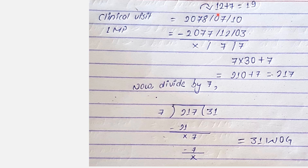We borrow 1 year from 2078, converting it to 12 months. So we have 12 plus 7 equals 19 months. Then 19 minus 12 equals 7 months. So 7 months into 30 plus 7 days equals a total of 217 days. Dividing 217 by 7 gives 31 weeks of gestation.